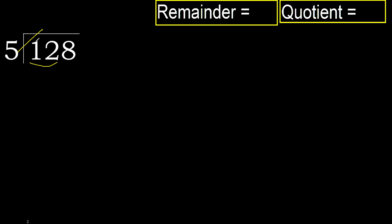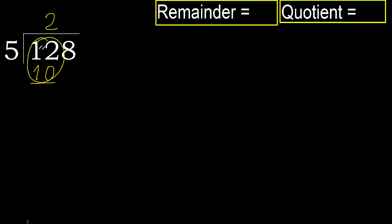But not greater. 5 multiplied by 3 is 15 — 15 is greater. Multiply by 2: 10 is not greater. OK, subtract. 12 minus 10 is 2.